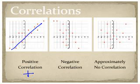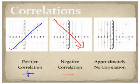The graph in the middle has a general flow downward from left to right. Much like a line and slope, this is going to be a negative correlation.